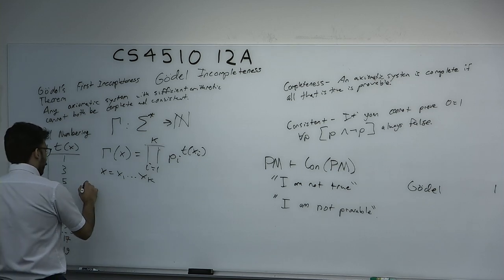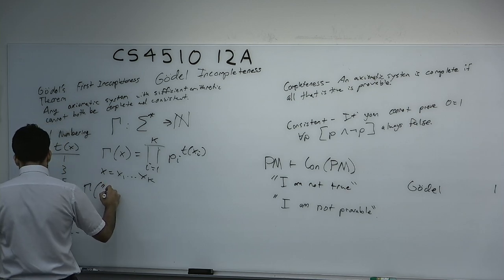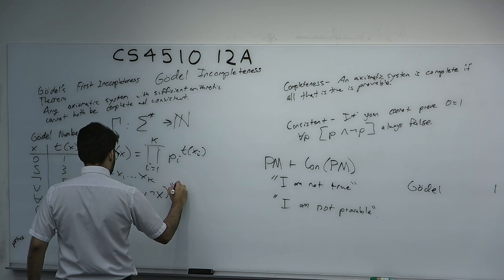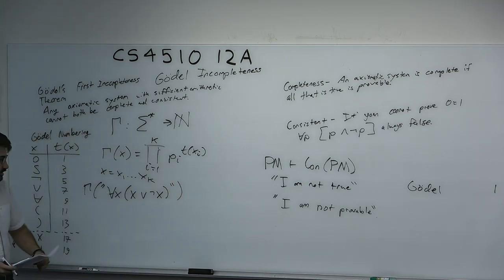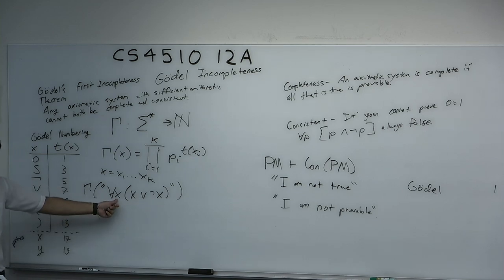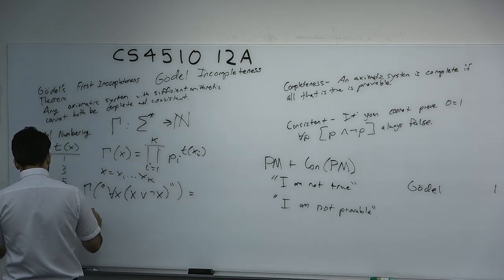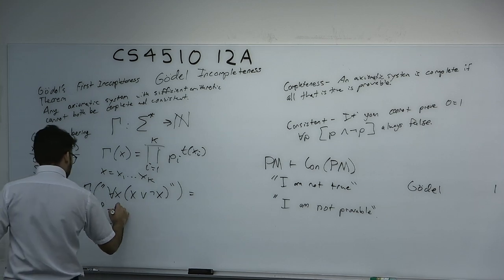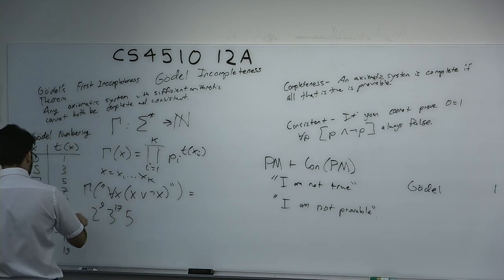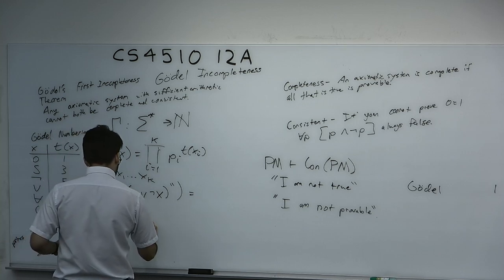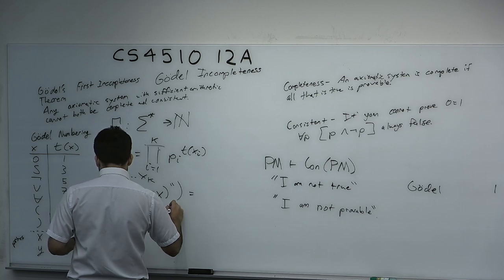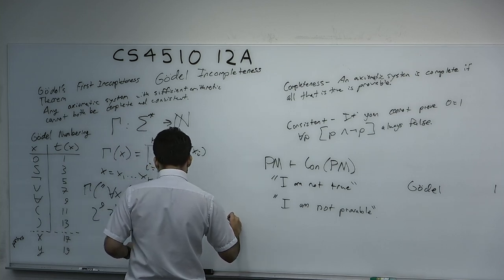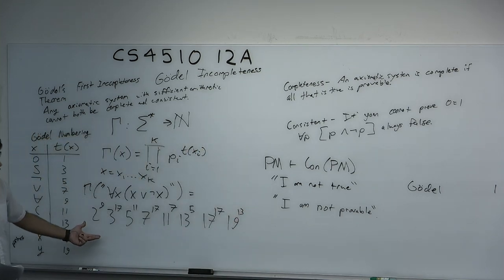To give an example, the Gödel number of the string 'for all x, x or not x' — the law of the excluded middle — would be represented by 2⁹ · 3¹⁷ · 5¹¹ · 7¹⁷ · 11⁷ · 13⁵ · 17¹⁷ · 19¹³. It's a massive number, really ugly, but the point is he gets to use the fundamental theorem of arithmetic: if two numbers are the same, the strings are the same.